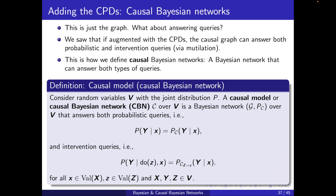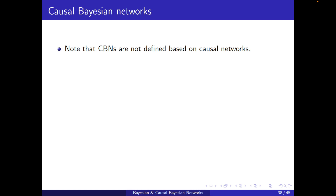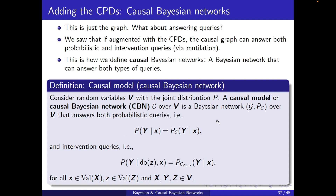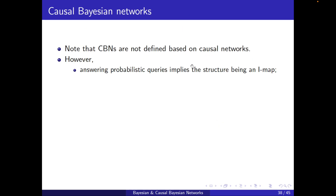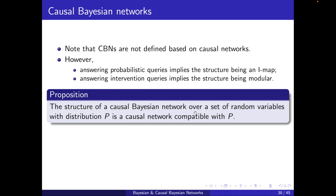In this sense, I don't need to go deep into an SCM. But that doesn't mean we don't need SCMs — that's the basis of causality; that's how we defined causality, at least in the non-probabilistic sense. Some questions can only be answered by SCMs. Note that CBNs are not defined based on causal networks; I didn't use any notion of causal network here. However, the graph of a causal Bayesian network satisfies the conditions for a causal network: answering probabilistic queries implies the structure is an IMAP, and answering intervention queries implies the structure is modular. So the structure of a causal Bayesian network over a set of random variables with distribution P is a causal network compatible with P.